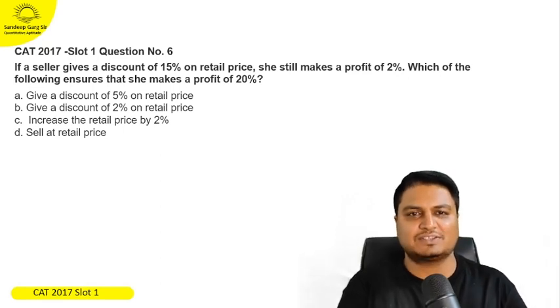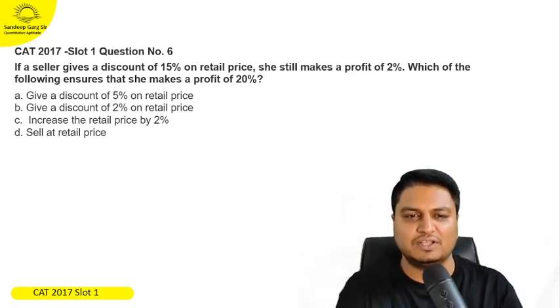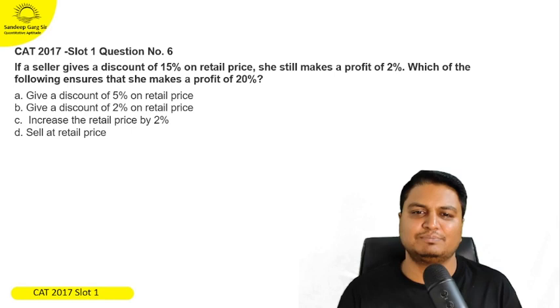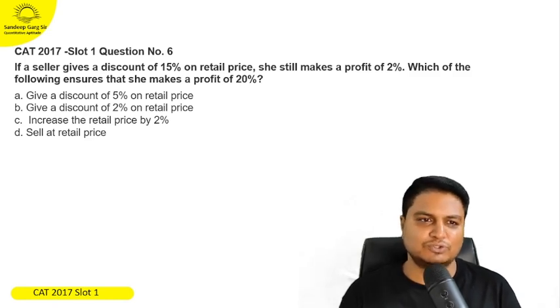If a seller gives a discount of fifteen percent on retail price, she still makes a profit of two percent. Which of the following ensures that she makes a profit of twenty percent? So there are four options here.